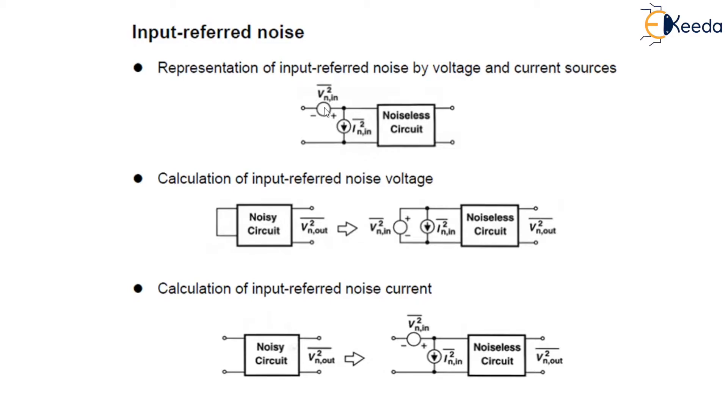It can be proved that this input noise voltage and the input noise current source are necessary and sufficient to represent the noise of any linear two-port network.